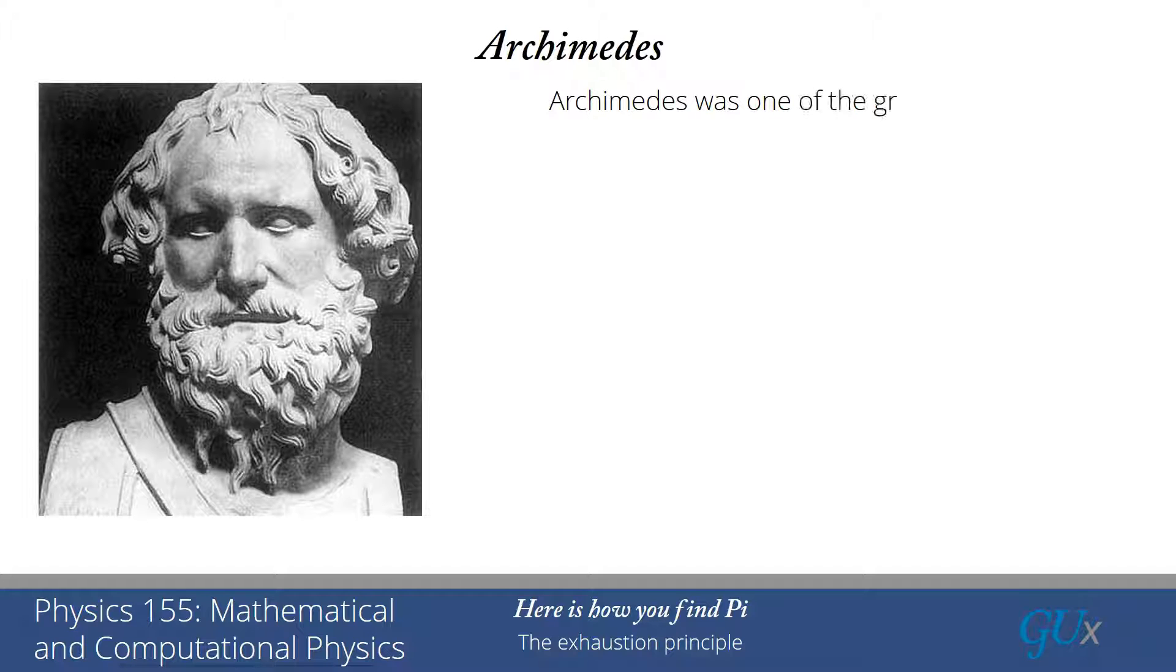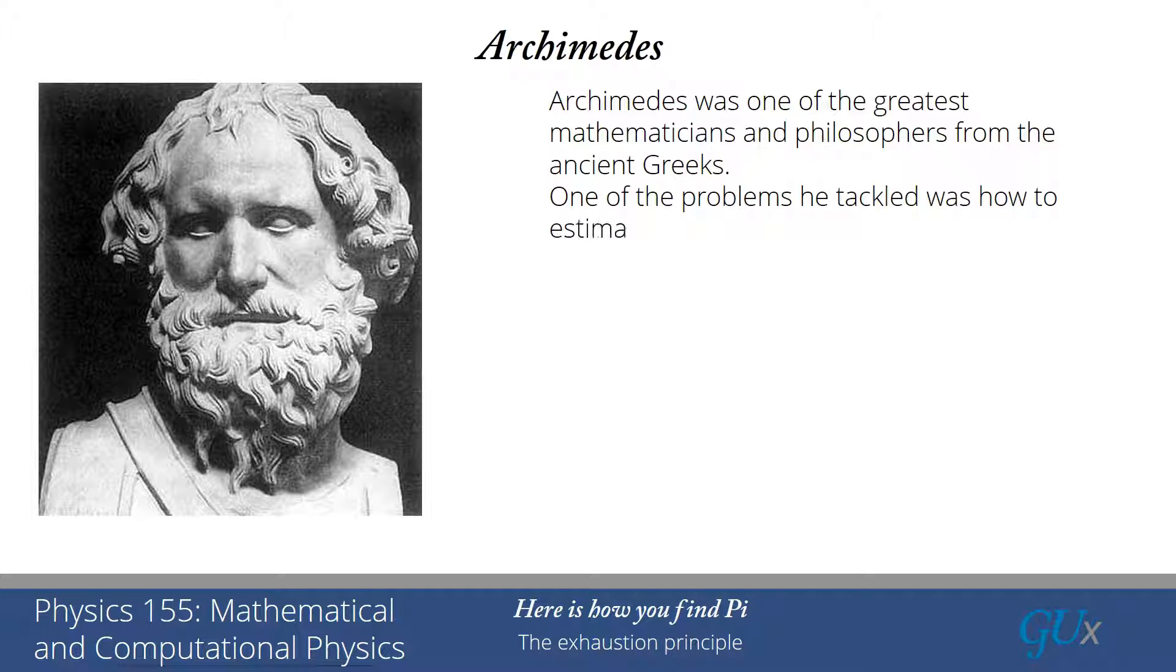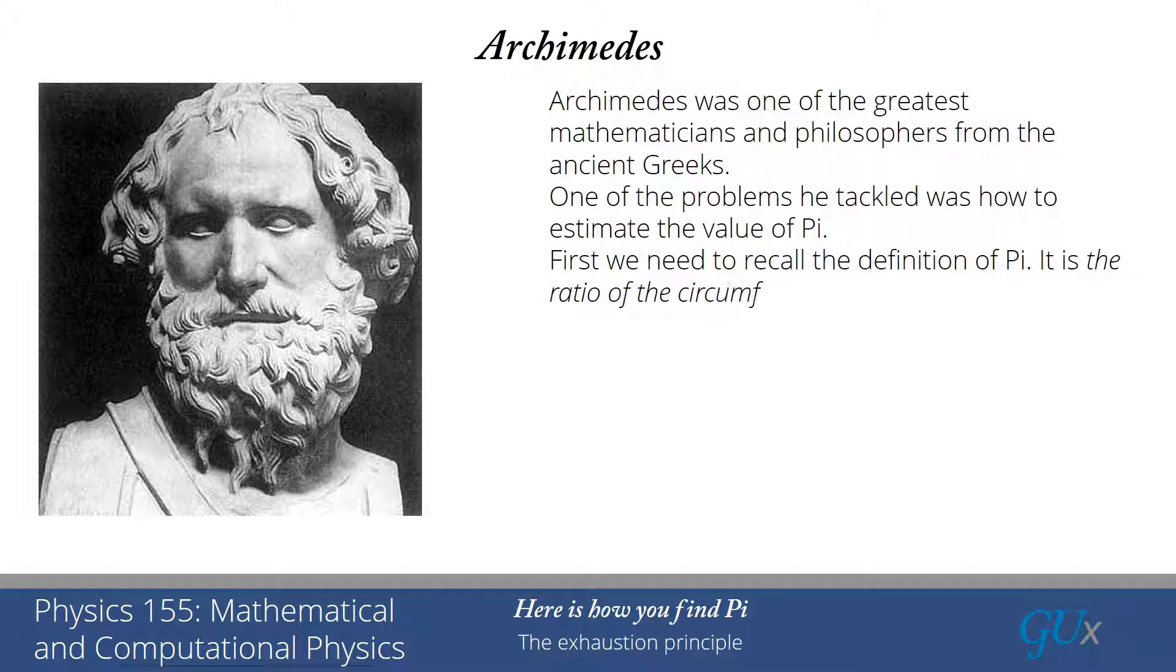Archimedes was arguably one of the greatest mathematicians and philosophers from the ancient Greeks. One of the problems that he tackled during that time was how to estimate the value of pi. He didn't have a calculator that he could just plug it into. So the first thing we need to do is to recall the definition of pi. And I asked students this, and they often have a lot of trouble remembering that it is simply the ratio of the circumference to the diameter of a circle.